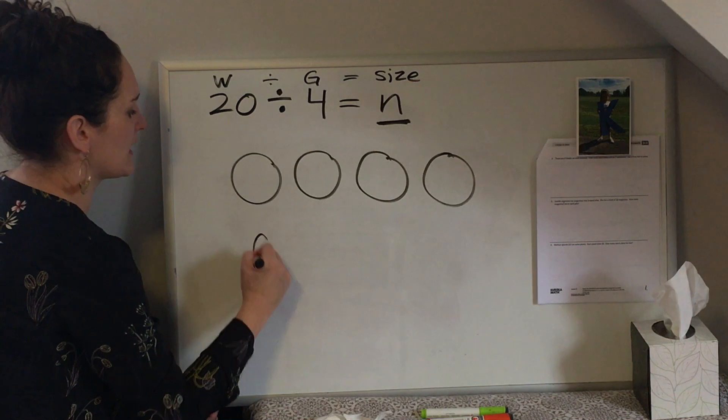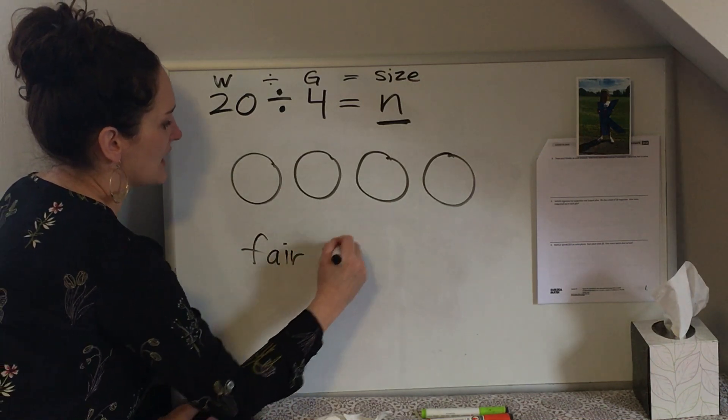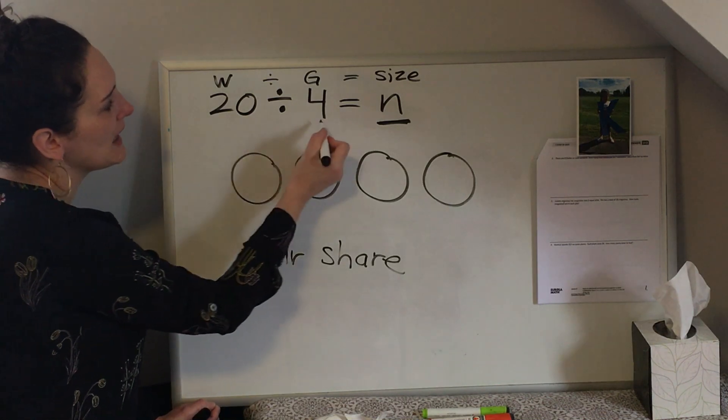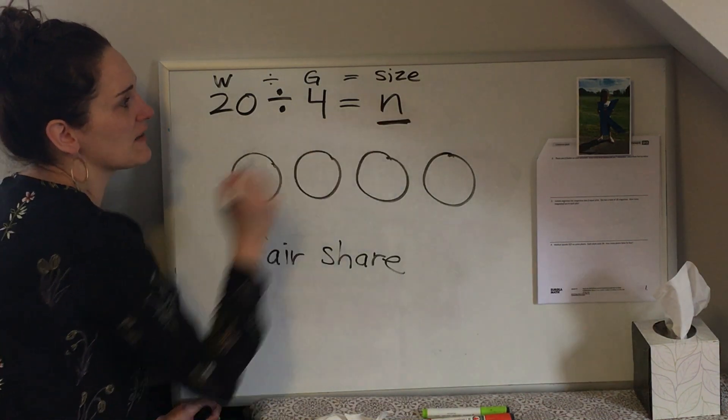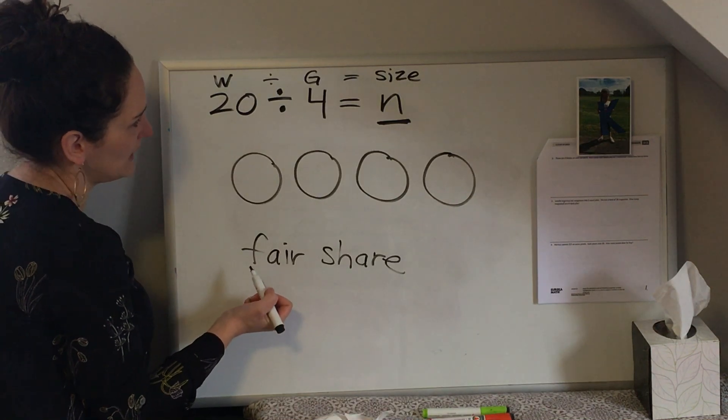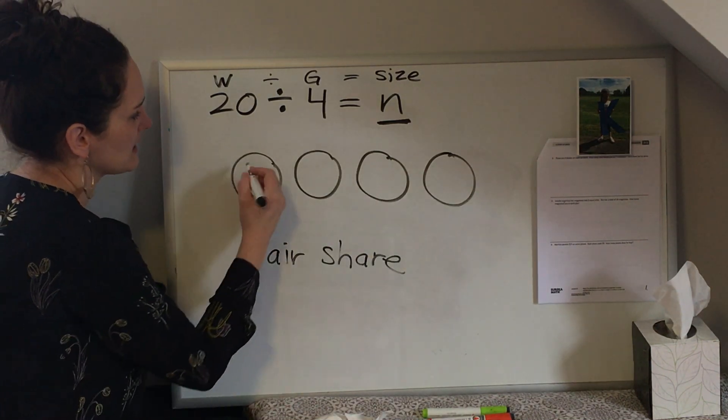So we're going to use what we call a fair share. You use a fair share if you already know your total or whole and you know the number of groups, but you have to figure out the size or the number in each group. So I'm going to take my 20 and I'm going to divide it among four groups.